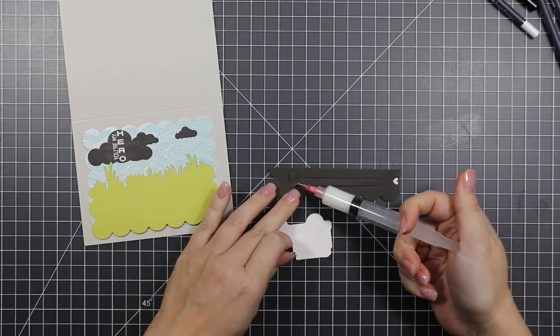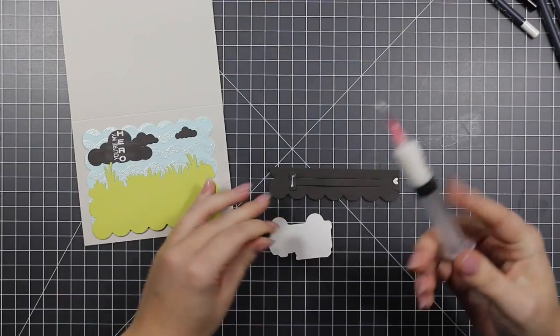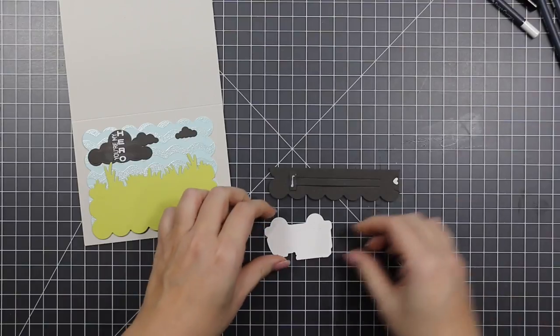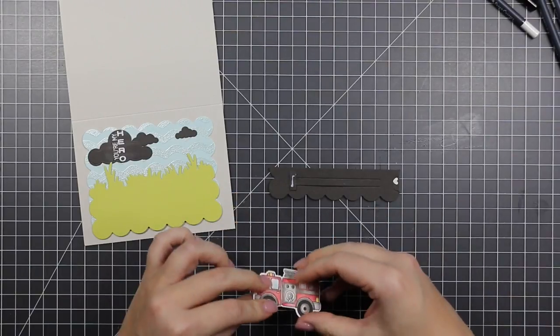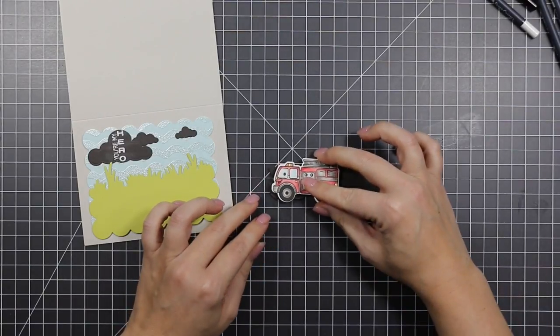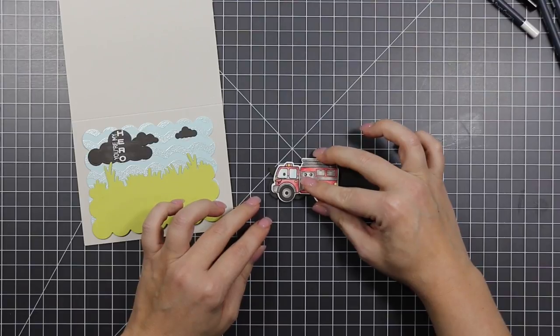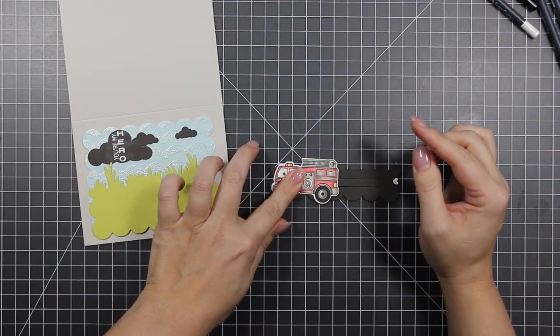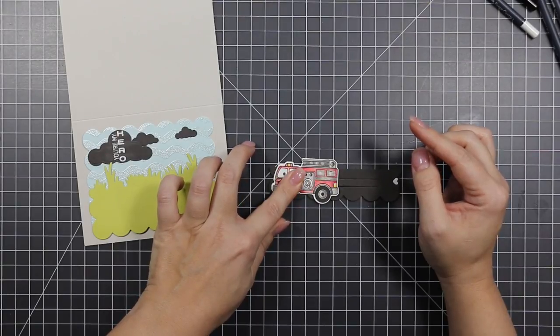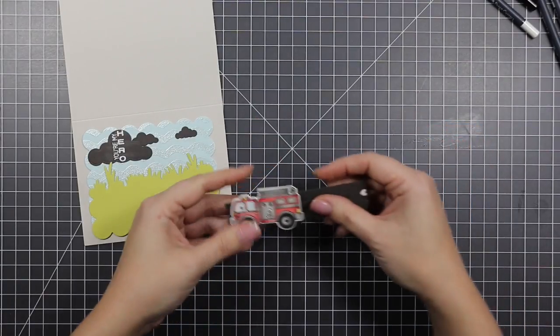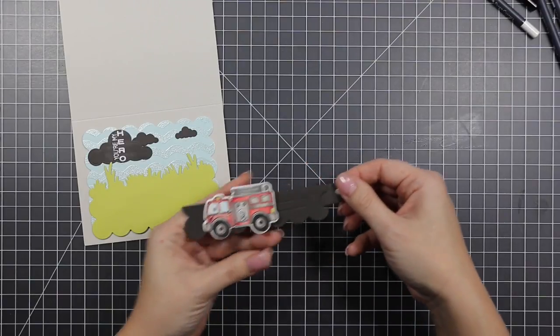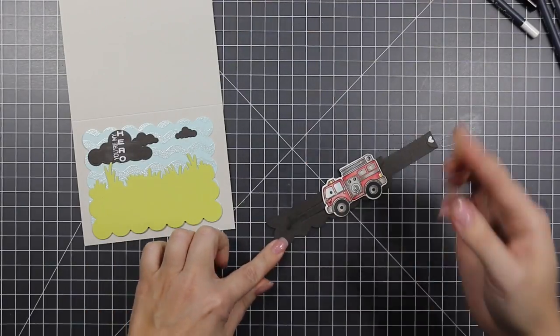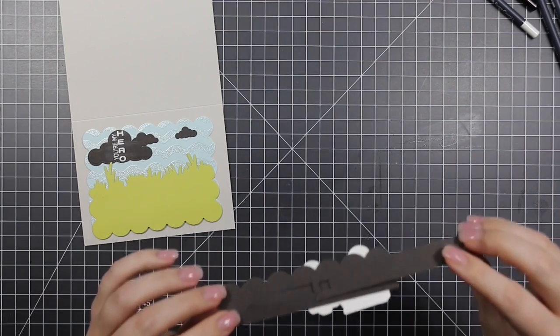I'm using coordinating dies to cut out my fire truck and we're going to use some liquid adhesive to go across that bridge that we created and adhere my fire truck. This is going to create the slider. I hold it on there for a few seconds and then I try to move it around so that I don't adhere everything together, so I know that everything is still moving.